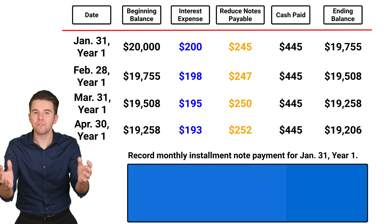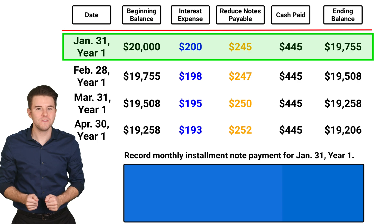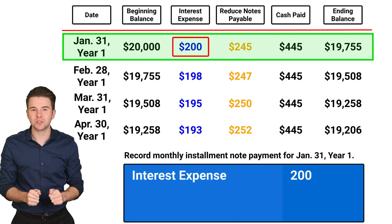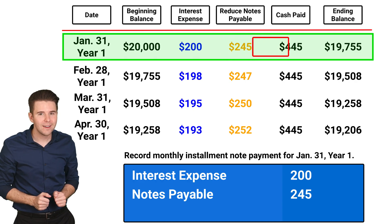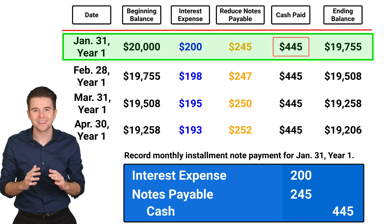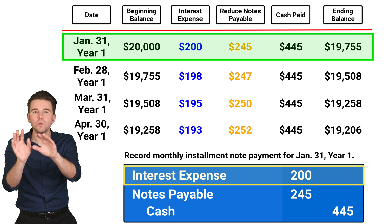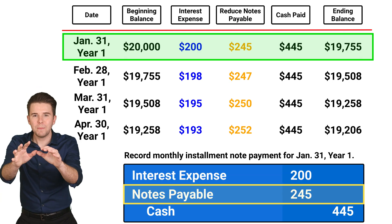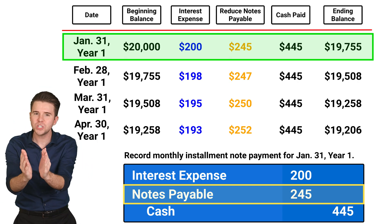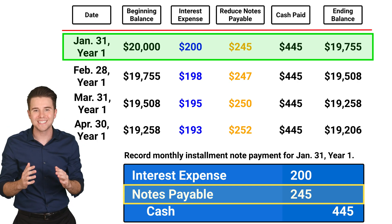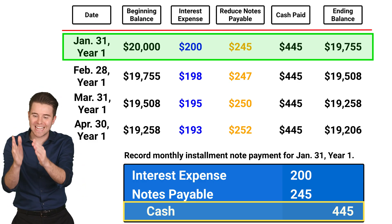Next, let's record monthly installment note payments, which is much easier after doing the amortization table. So for January 31st of year 1, we record a debit to interest expense for $200, a debit to notes payable for $245, and a credit to cash for $445. The debit to interest expense increases that expense account and reflects the annual interest on the note. The debit to notes payable reduces the balance in that liability account, recognizing that we have now paid back a portion of the principal through an installment payment. We credit cash for $445, as this is the installment payment amount made at each period end.